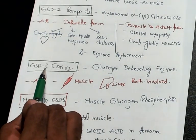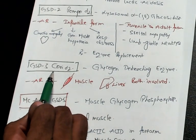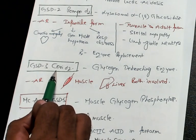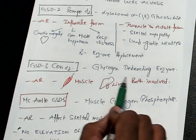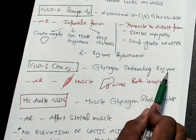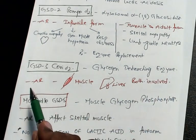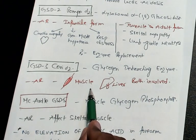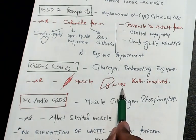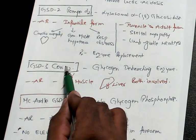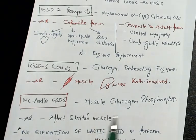Glycogen storage disease 3 is Cori disease. Glycogen debranching enzyme is the one which is deficient. It is also autosomal recessive. Both muscle and liver are involved in Cori — that is the point you need to remember.